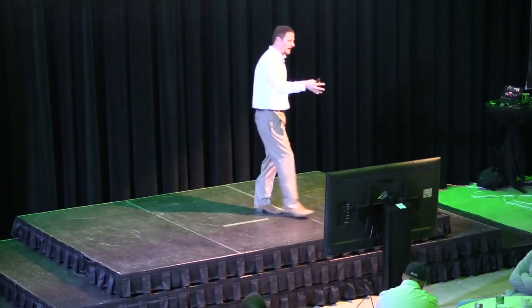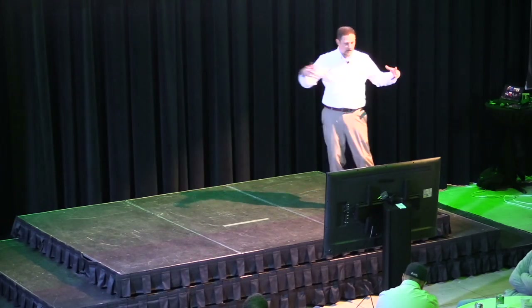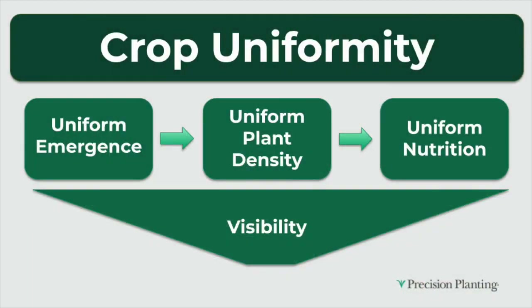Whether it's soybeans, corn, or any crop, you don't put 35,000 corn plants in a field hoping to get 28,000 and then plan your fertility around 28,000. We've got to narrow those windows for emergence, get our plant density figured out, then attack nutrition. But if I have no visibility to any of that, how can I attack any of them?